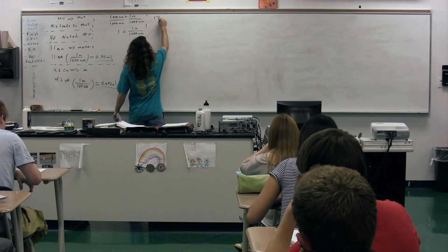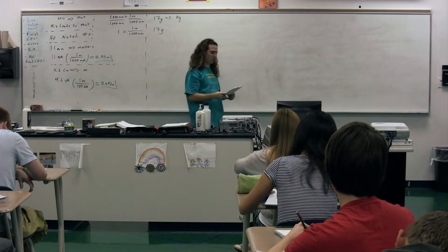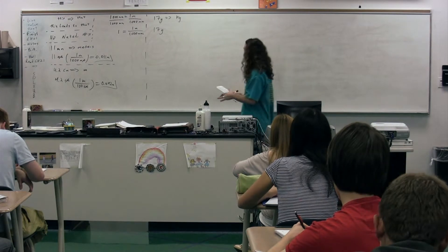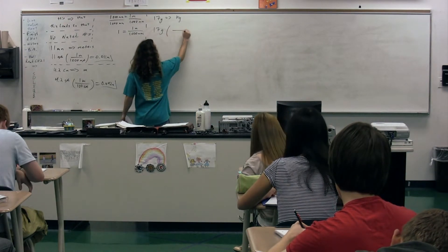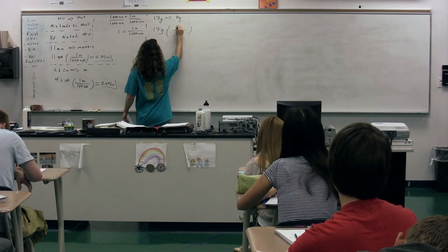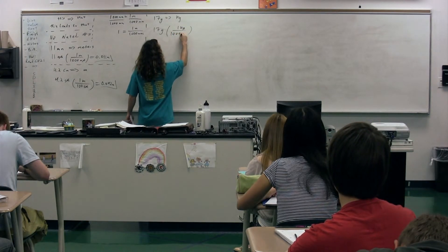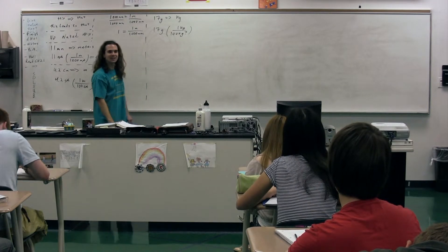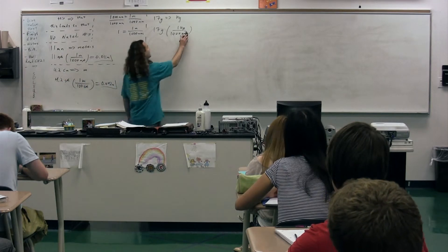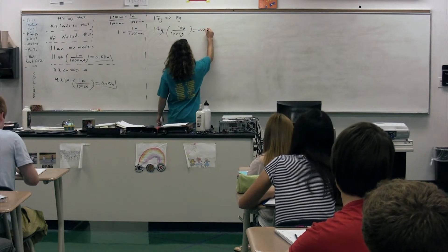17 grams converting to kilograms. Susan: you would multiply 17 grams times 1 kilogram over 1,000 grams. Grams cancel out and we get 0.017 kilograms.